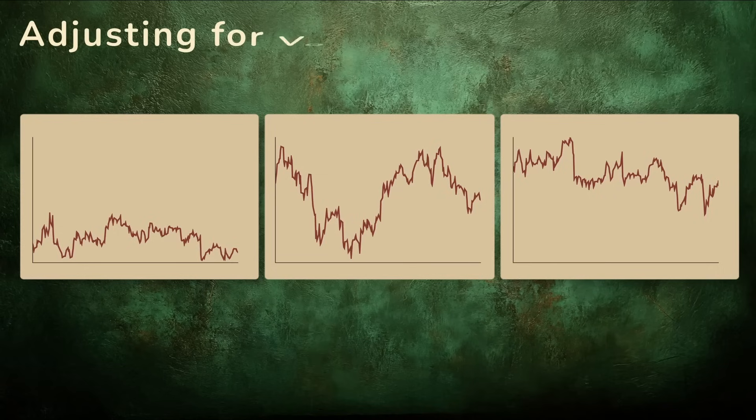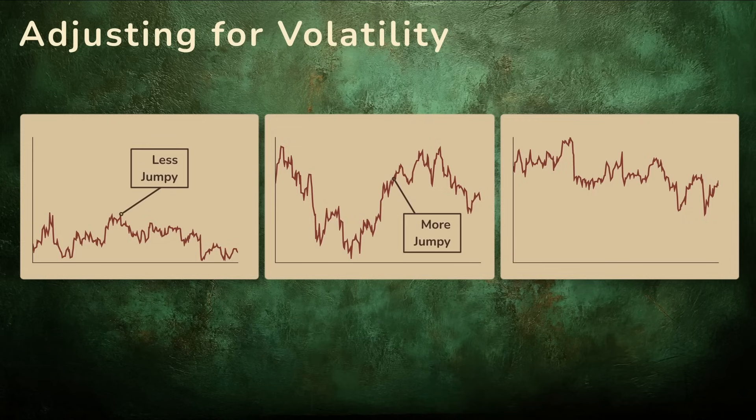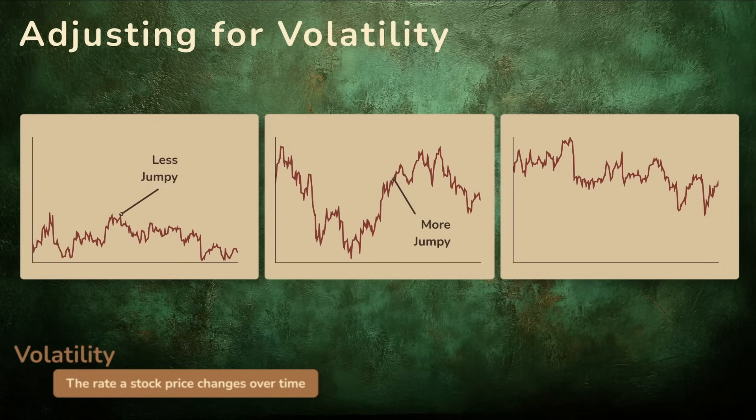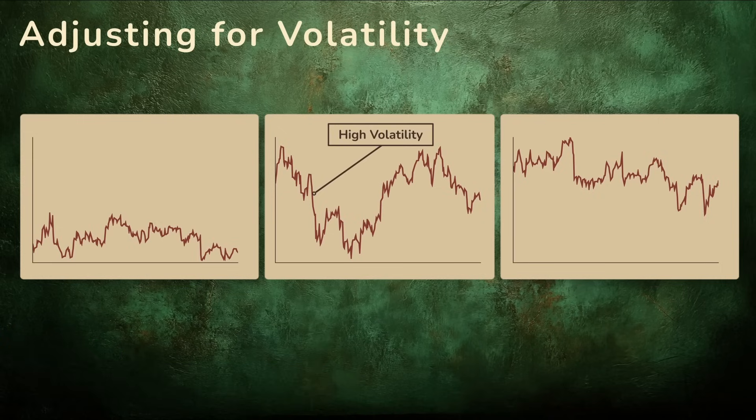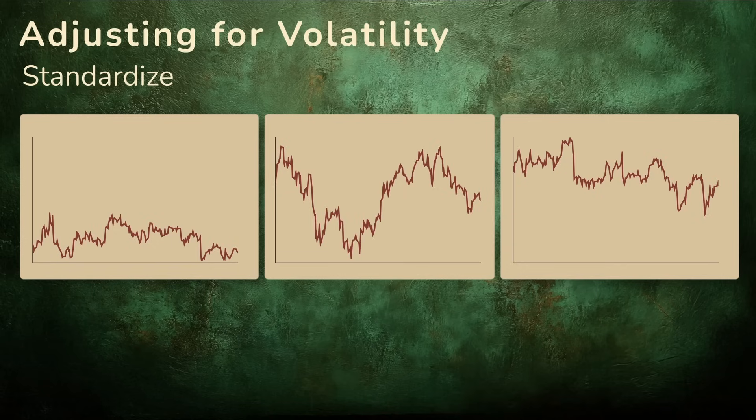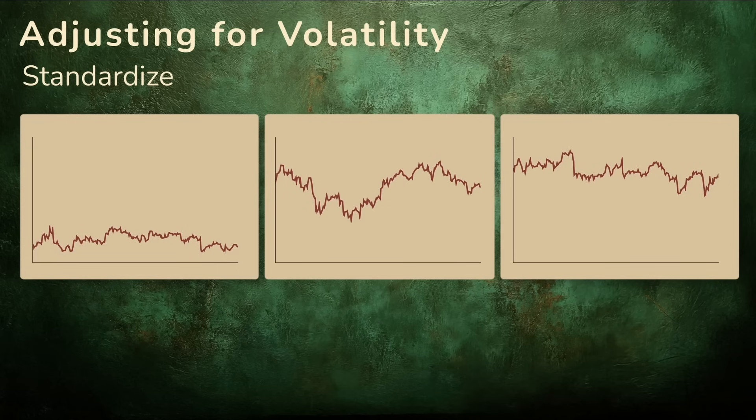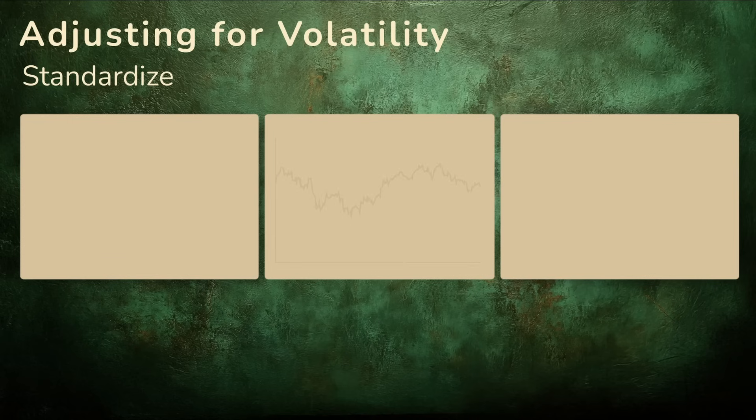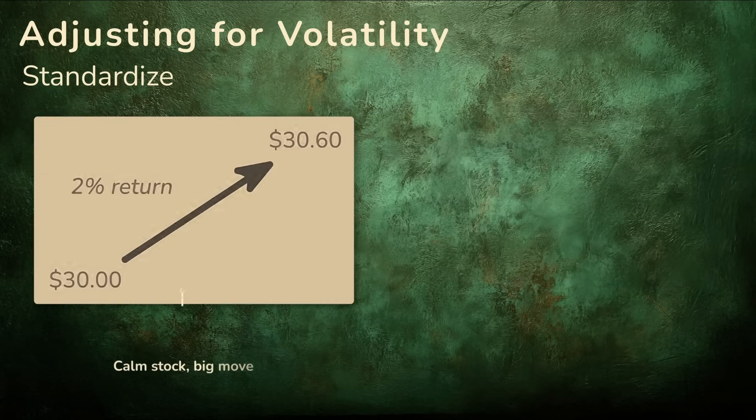What remains? We still need to address the distinct way each stock moves. Some are jumpier than others. We call this volatility, and you can think of it as the size of the steps a stock takes each day. Some stocks have big dramatic changes, while others make smaller, steadier moves. To compare them fairly, we standardize these returns by dividing by their standard deviation. This process transforms all returns into a common scale, showing us how far each return is from the average in terms of its own volatility.